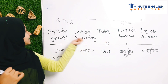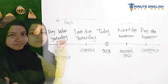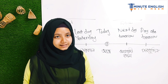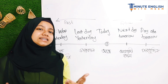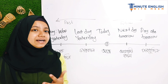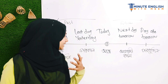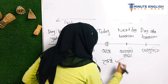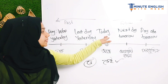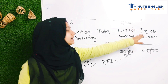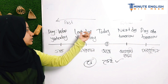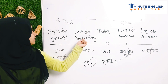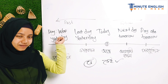Today, next day, day after tomorrow — and if you go back: yesterday, and one day before yesterday. These are the vocabulary words for days. So: today, next day, day after tomorrow, last day, yesterday, day before yesterday.